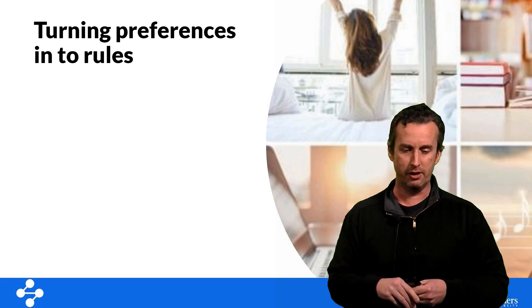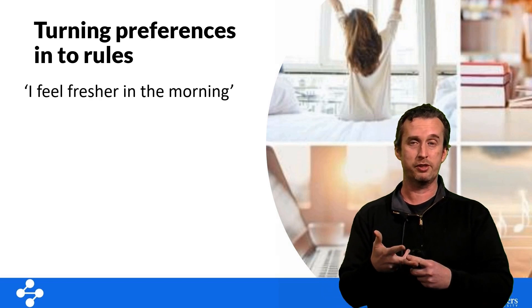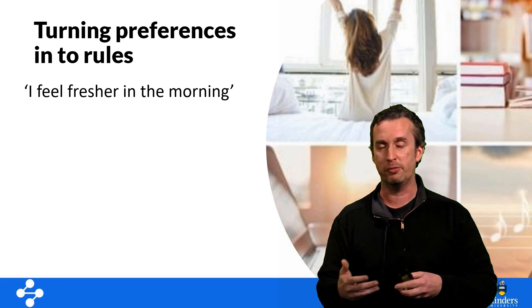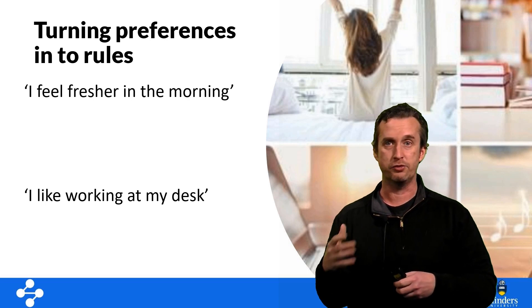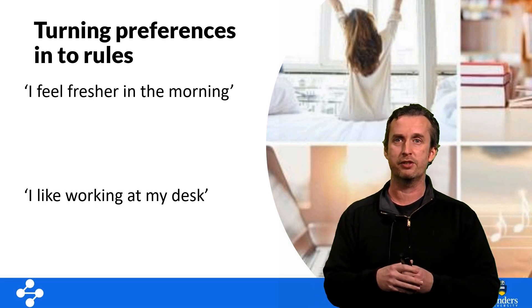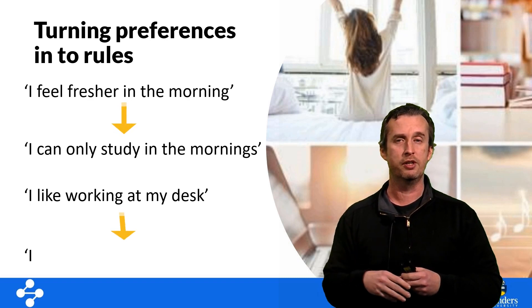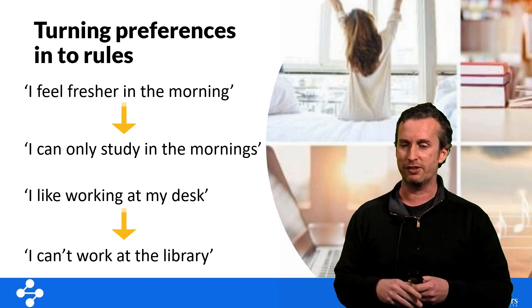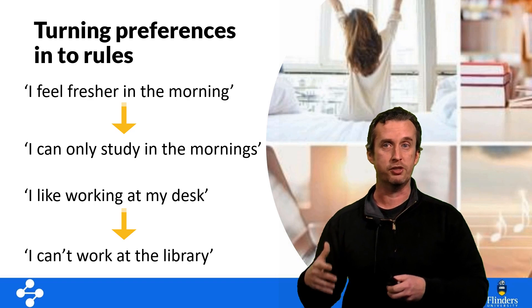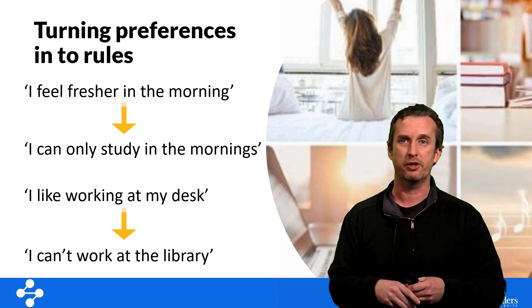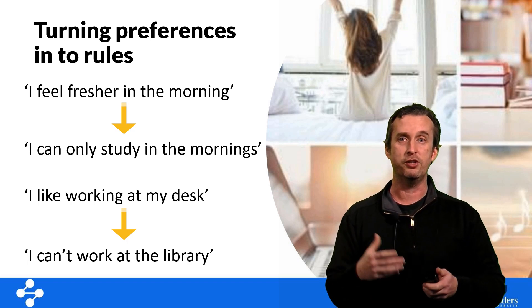So those are some of the more obvious ways that we procrastinate, but there are also some more subtle ways that we procrastinate. I've got certain preferences in the way I work - I like to do most of my work in the morning, I certainly like to do the more complex work in the morning, and there are certain places I enjoy working more. But it's not always the case that those conditions can be exactly right. But what people do sometimes is they turn their preferences into rules, and then they apply those rules to whether or not they should be studying now. People who feel fresher in the morning might turn that into a rule which is I can only study in the morning. And as you can imagine, as you start to assemble more and more of these rules, you really limit the number of situations where you can effectively study.